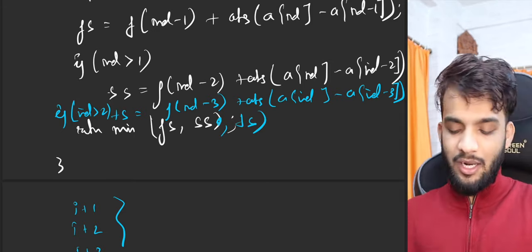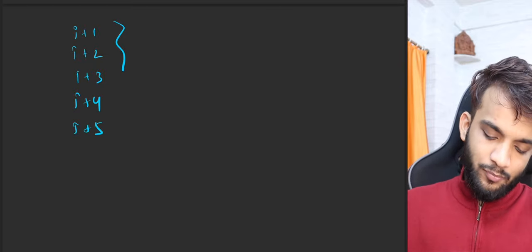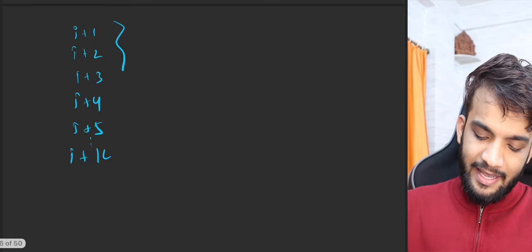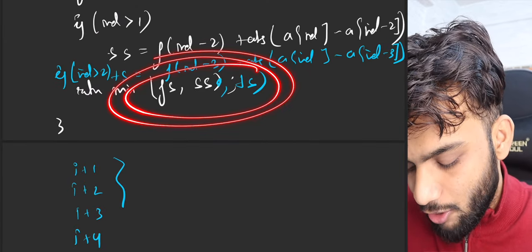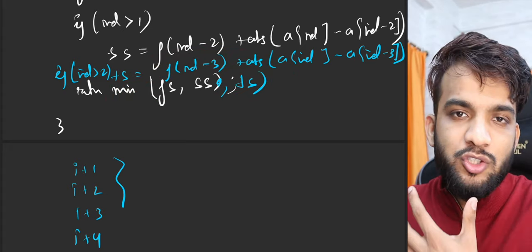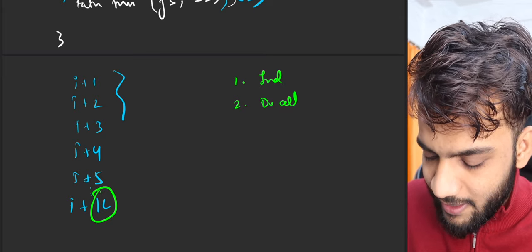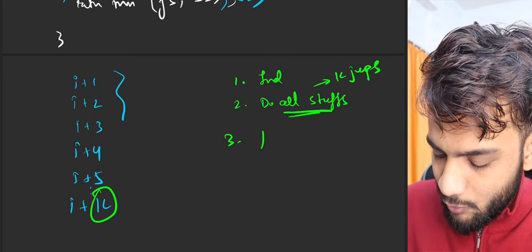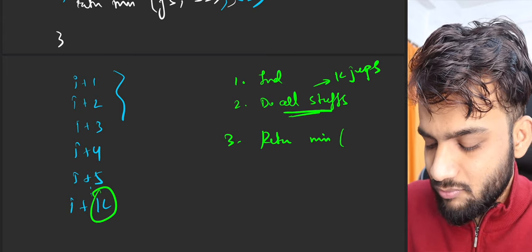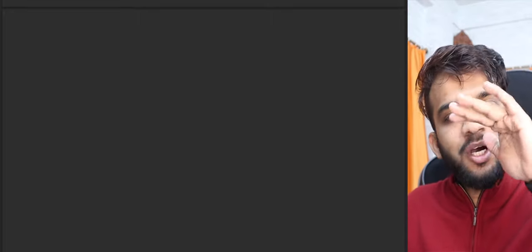If I change it to i+4 there will be a fourth case, i+5 a fifth, and so on. Now if I give you k, where k can vary from question to question, it makes sense to generalize — ultimately you're taking the minimum of whatever jumps you're making. So if I give you k possible jumps, you perform the recurrence on the index, do all k jumps, and return the minimum.